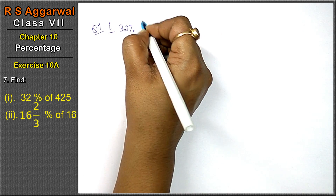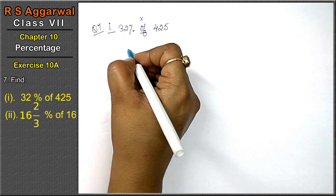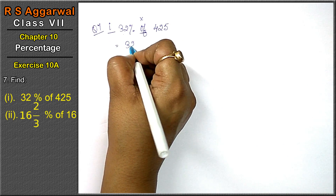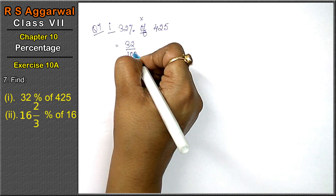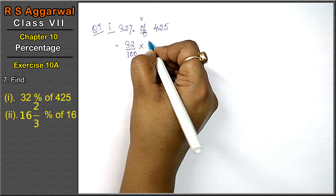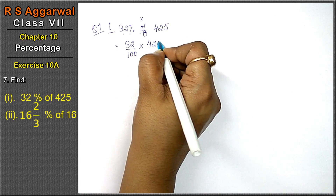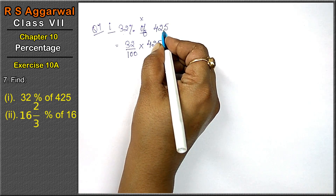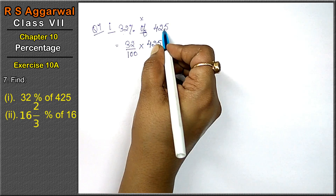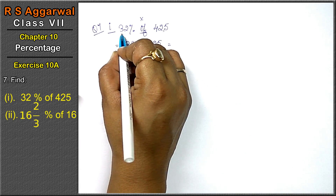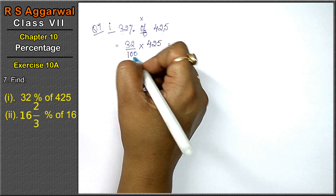Off means multiply. 32% means 32 upon 100. Friends, off means multiply — 425. What will be 32% of this? 100% means 425, but how much is 32%? We have set this up.